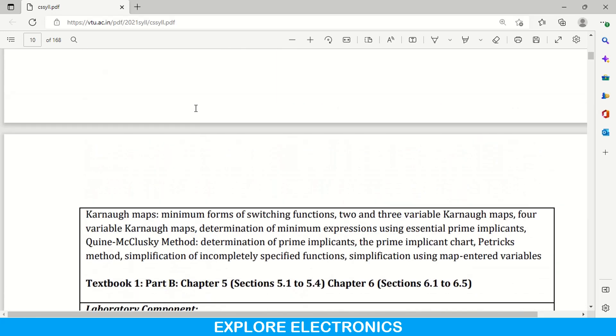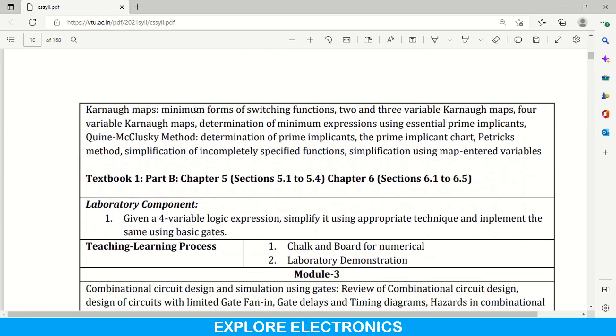And then module 2, module 2 is of digital part that is to simplify the Boolean expressions we will be using K-map. K-map minimum forms of switching functions, 2 and 3 variable K-maps, 4 variable K-maps and minterm. These are the things covered in the first half of the module. Next method to simplify the Boolean expression is Quine-McCluskey method. This chapter or this module is just consisting of K-map simplification and Quine-McCluskey method simplification of Boolean expressions and things related to that. Here also it is given textbook 1 need to be referred, chapter 5, chapter 6. And here laboratory component is that given a 4 variable logical expression, simplify it using appropriate technique and implement it using basic gates. This is the laboratory component they have given.